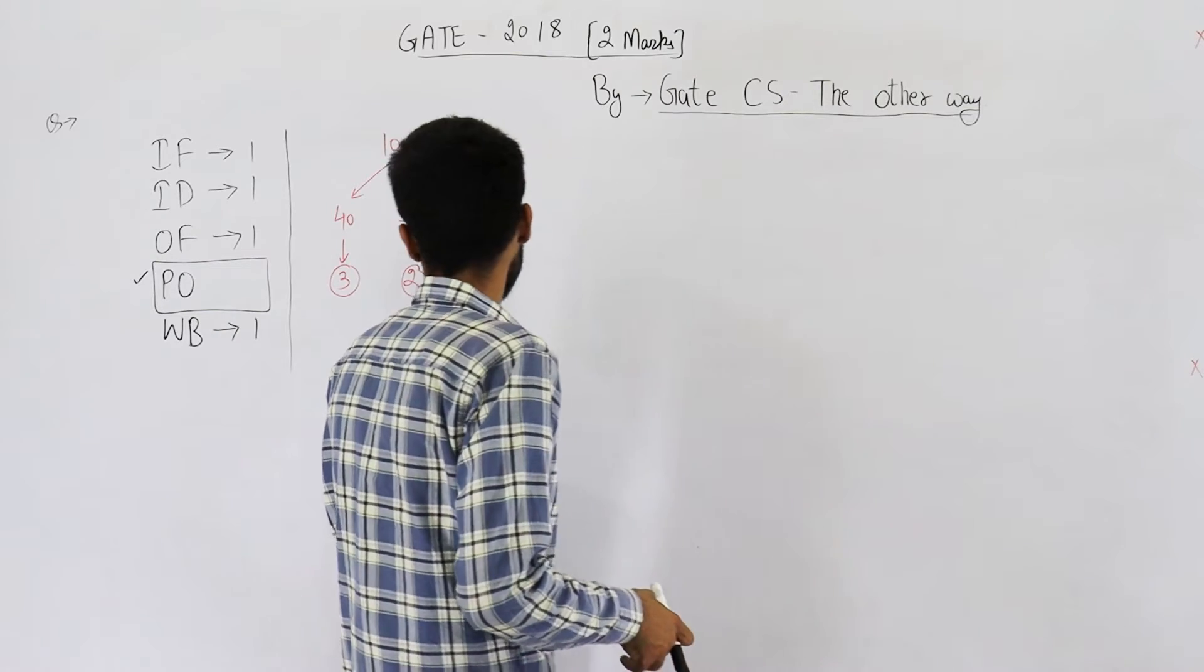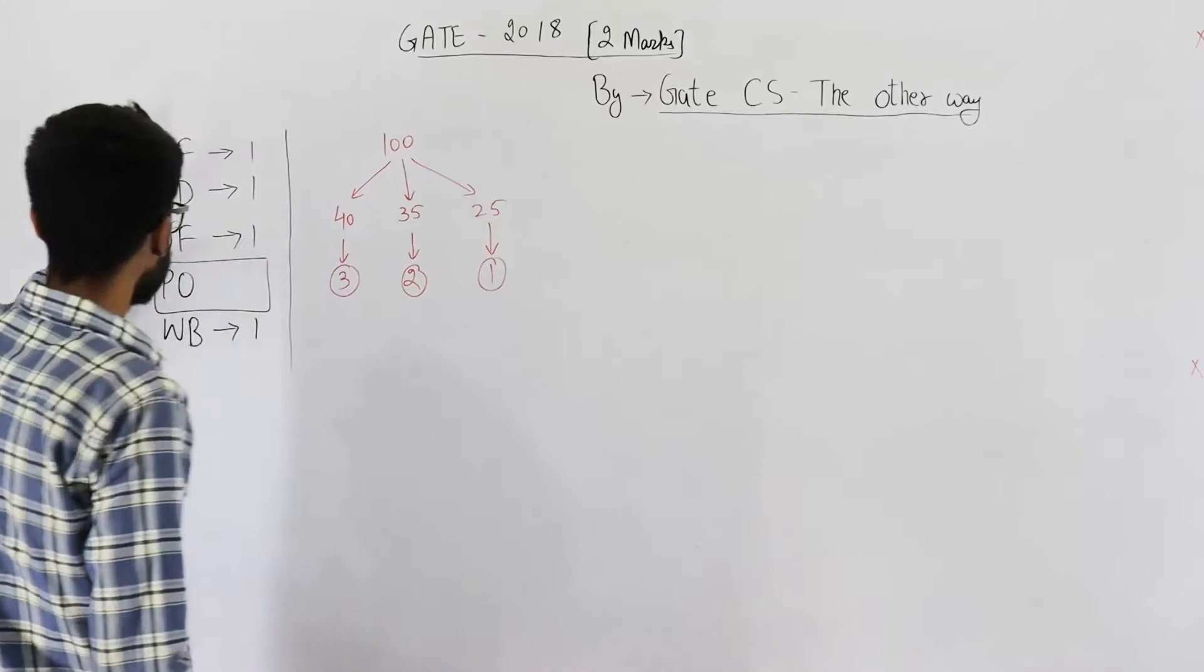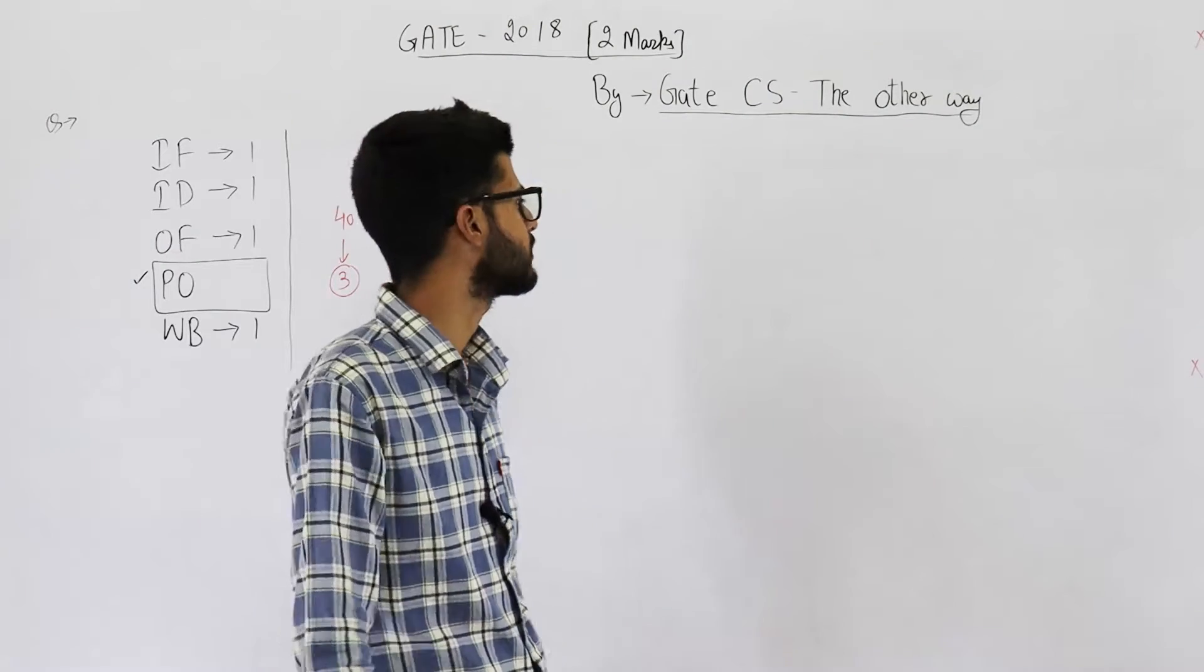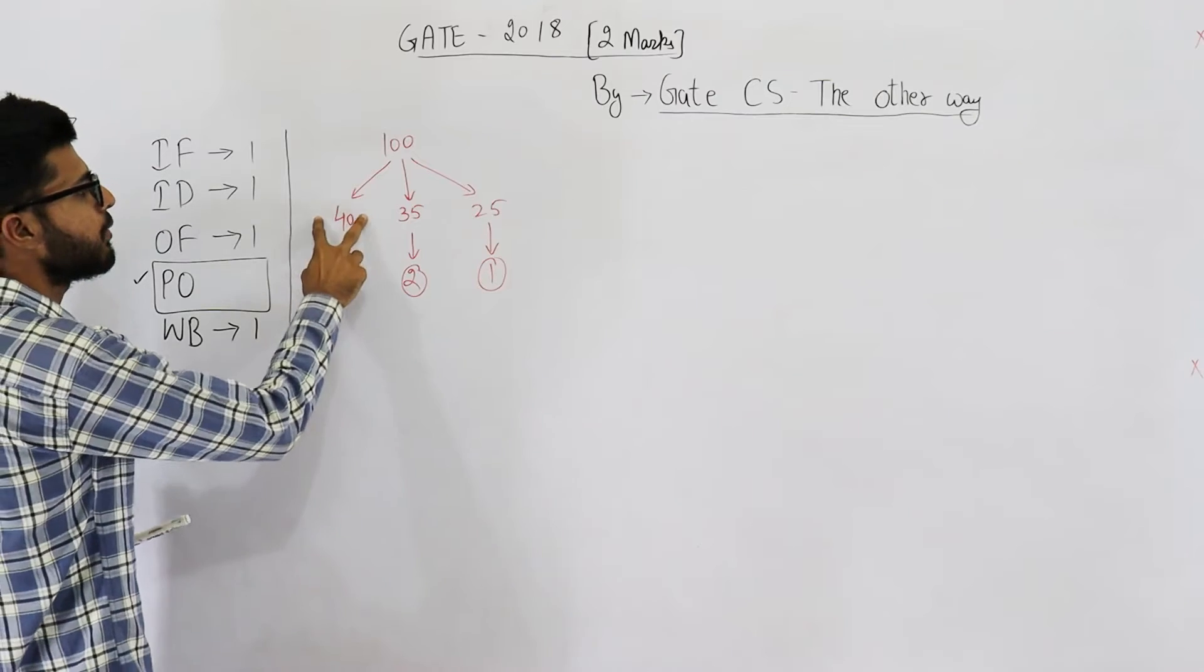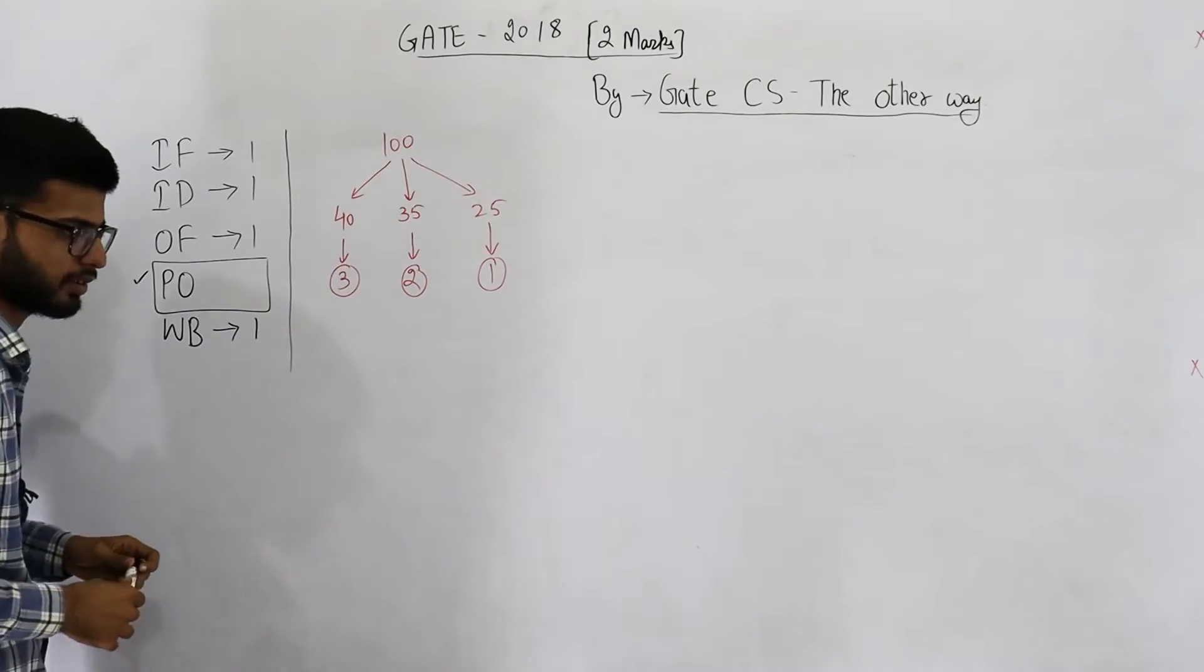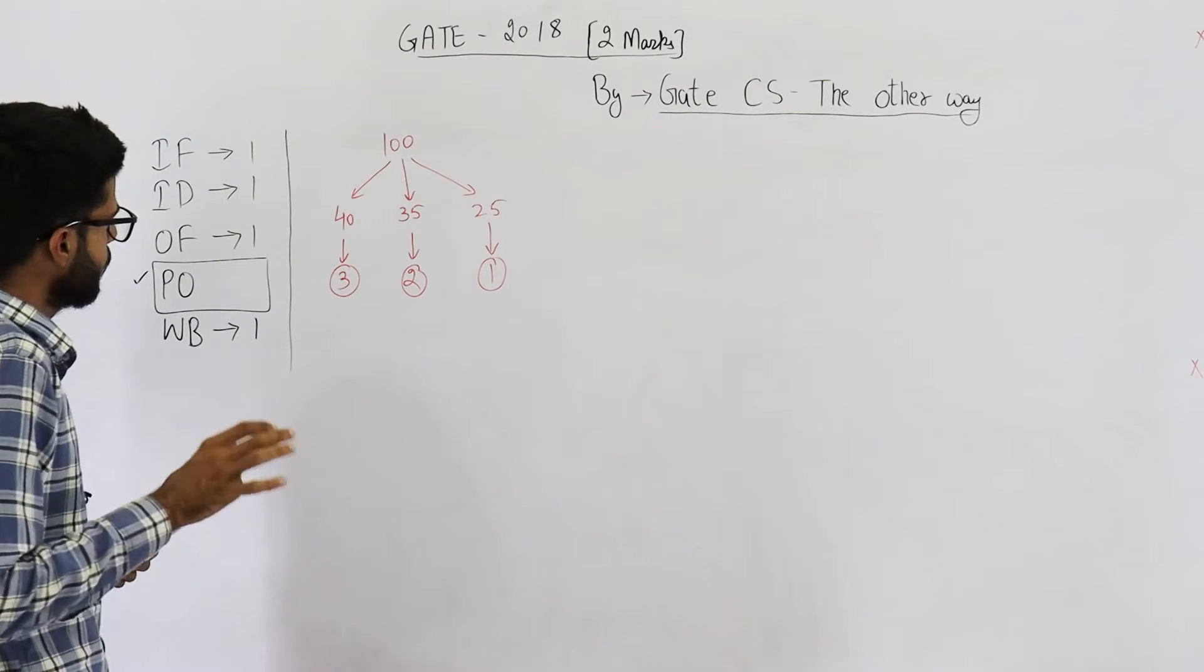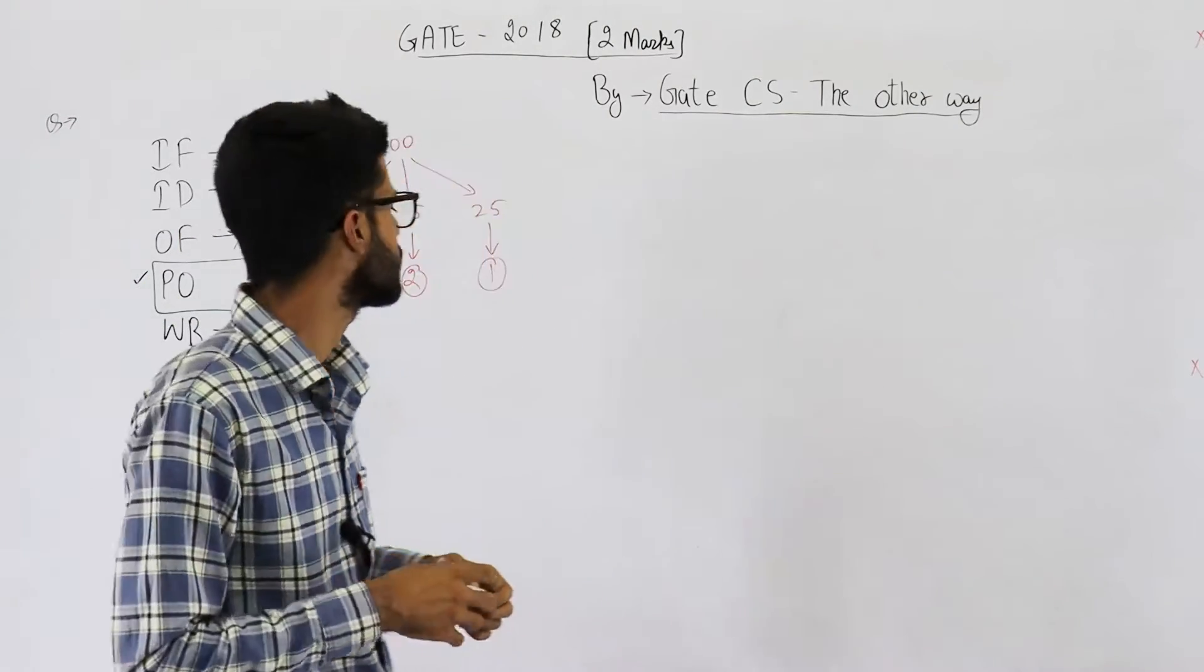The number of clock cycles required for completion of execution of the sequence of instructions is... Okay, so let's try to solve this question. They are saying that we have a pipeline consisting of these 5 stages, where these 4 stages require 1 clock cycle each for whatever kind of instruction it is. But PO stage requires 3 clock cycles for 40% of the instructions, 2 clock cycles for 35% of the instructions, and 1 clock cycle for remaining 25% of the instructions. Now, you see that there are no stall cycles created because they have mentioned that there are no data hazards or control hazards.